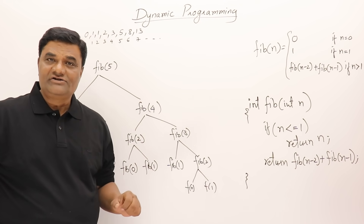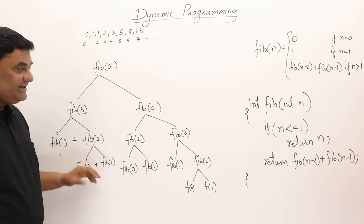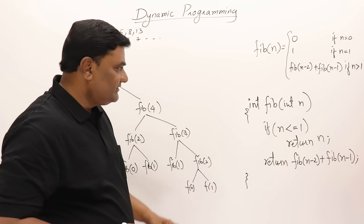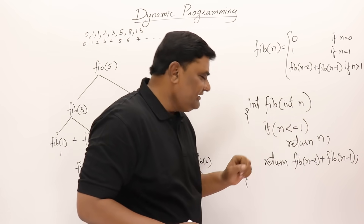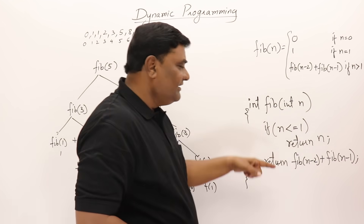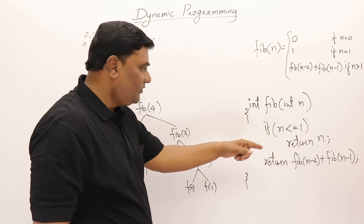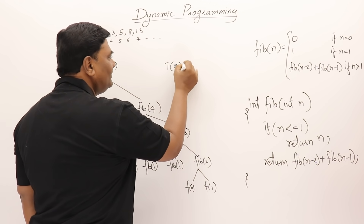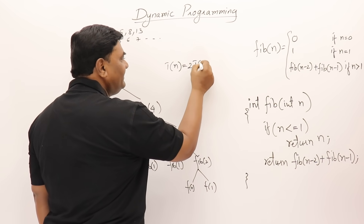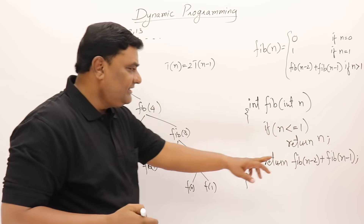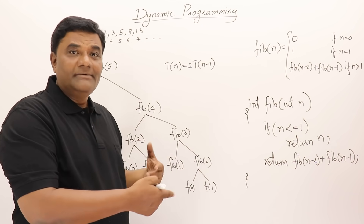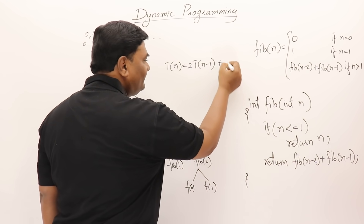For finding fib(5) it is making a total of 15 calls. To find the time complexity, from the function we see it calls itself for n-2 and n-1. If we assume roughly n-1 only, we can prepare a recurrence relation: T(n) = 2T(n-1), since it is calling itself two times and just adding each time.